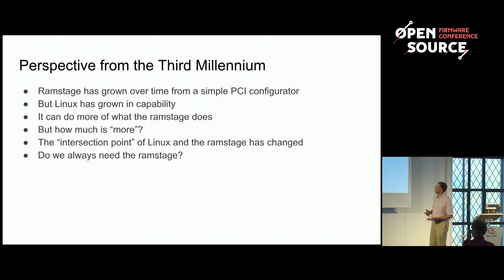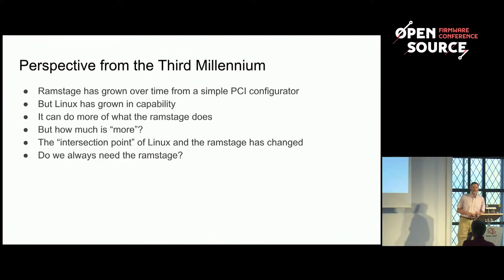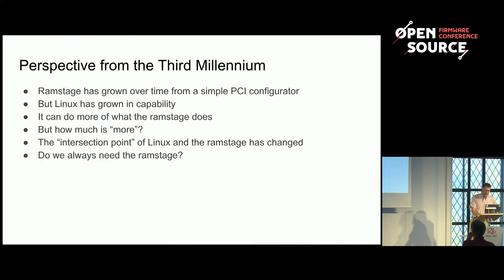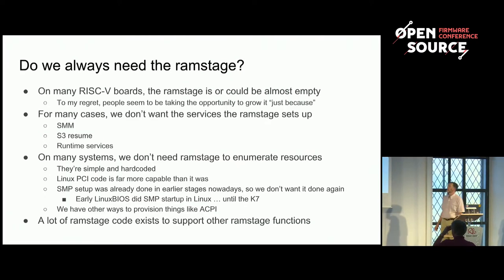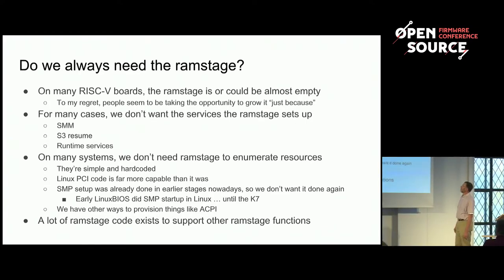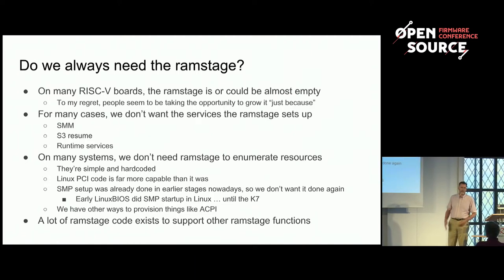So the question is: you can think of an intersection point in capabilities between what Linux knows how to do and what the RAM stage does. Do we need the RAM stage? Is the intersection of capabilities at a point where Linux could just do what the RAM stage does today? Part of what drove this is the early RISC-V ports, where there was no RAM stage — the only thing the RAM stage did was load the payload.